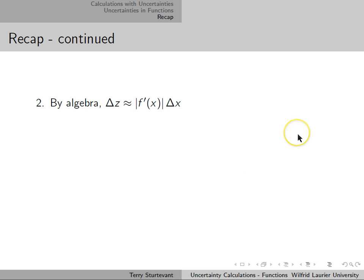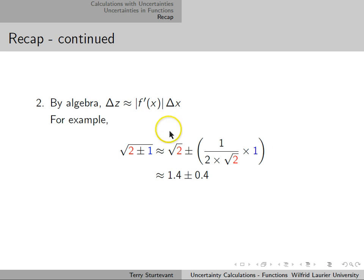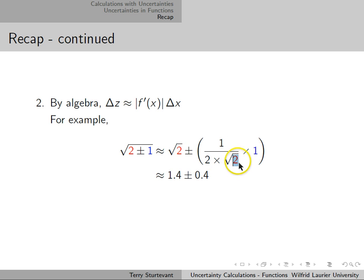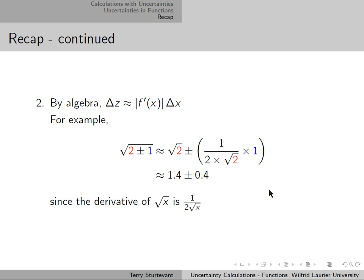By algebra, the uncertainty in the function is the derivative of the function times the uncertainty in the variable. In our previous example, the square root of 2 plus or minus 1 is the square root of 2 plus or minus 1 over 2 times the square root of 2 times 1, which is 1.4 plus or minus 0.4, since the derivative of the square root of x is 1 over 2 times the square root of x.